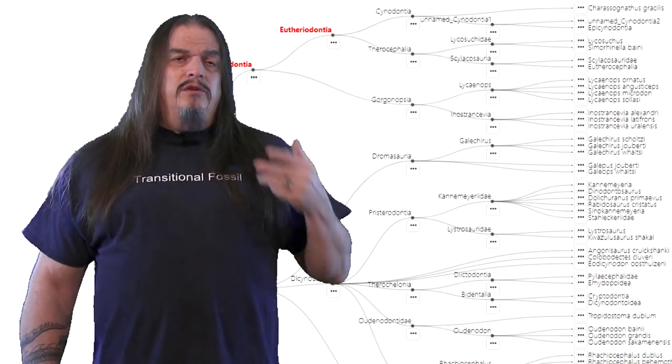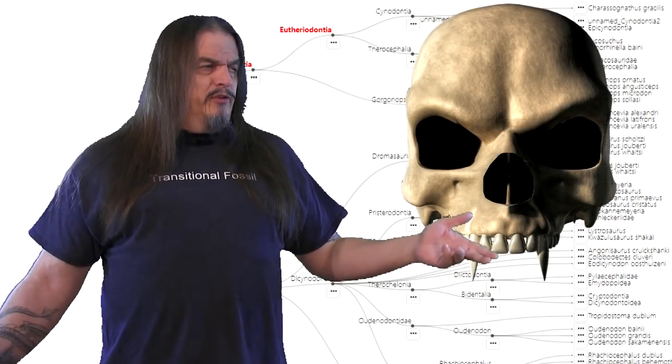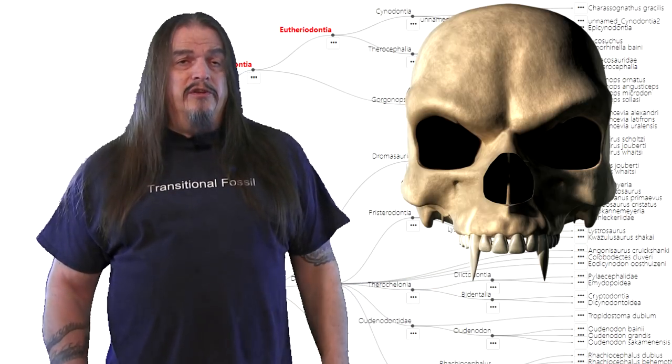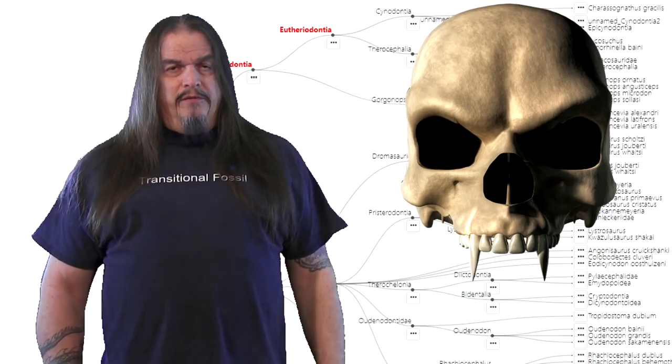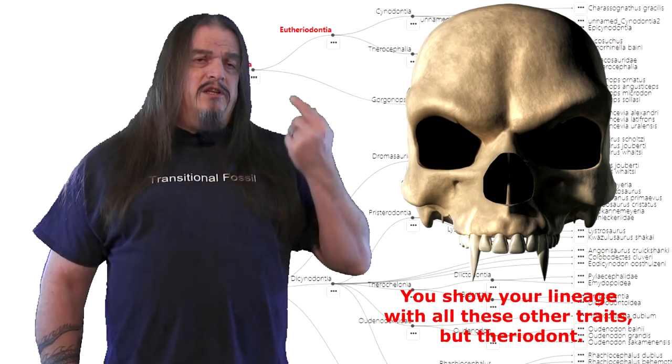And notice that when you chew, you use your cheek teeth and your incisors for most everything. You have canines, but you don't use them for anything because they're puny and pathetic. They're a vestige of your distant ancestry and a mere shadow of their former glory. You show your lineage with all these other traits, but there you don't.